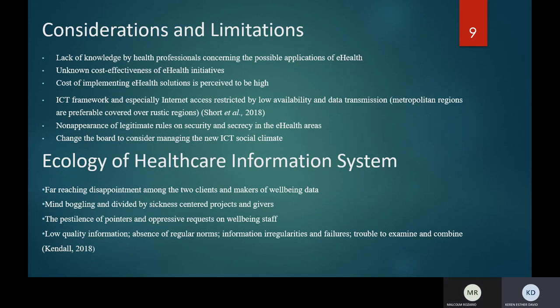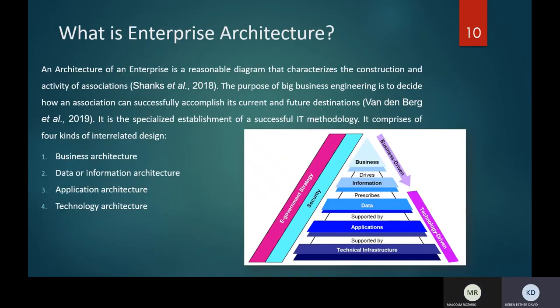The ecology of the healthcare information system in low and middle income countries highlights widespread dissatisfaction among both users and producers of health information. Issues include complex and fragmented disease-focused programs, an epidemic of indicators, burdensome demands on health personnel, poor quality data, lack of common standards, data inconsistencies and inefficiencies, and data that is difficult to analyze and synthesize.